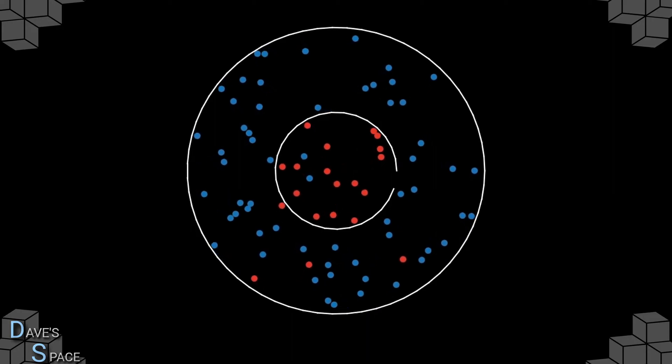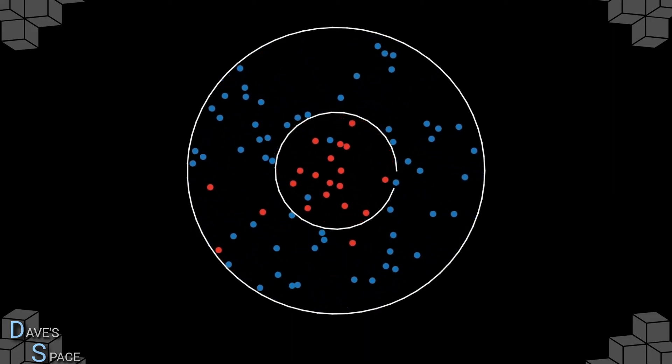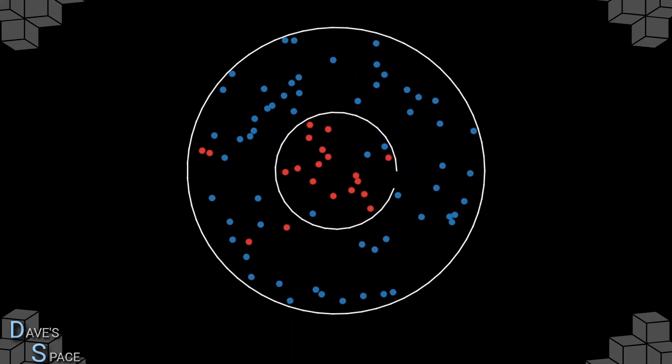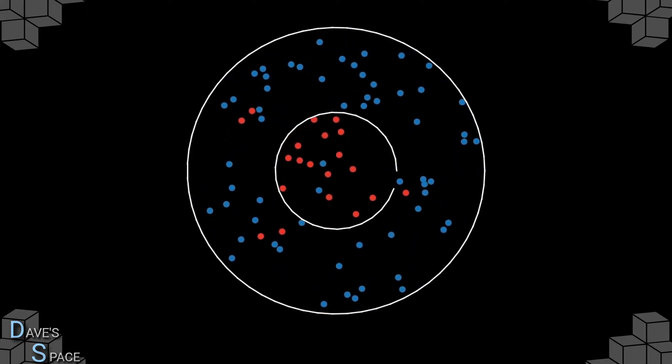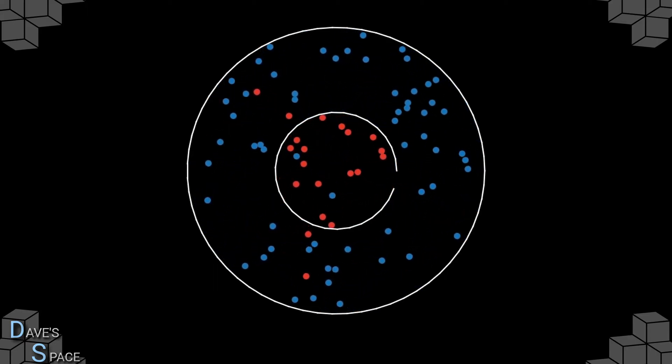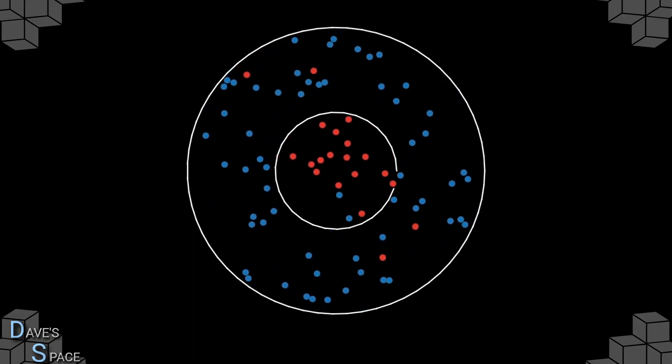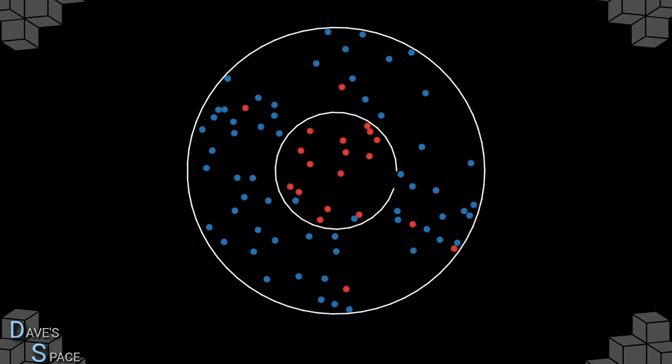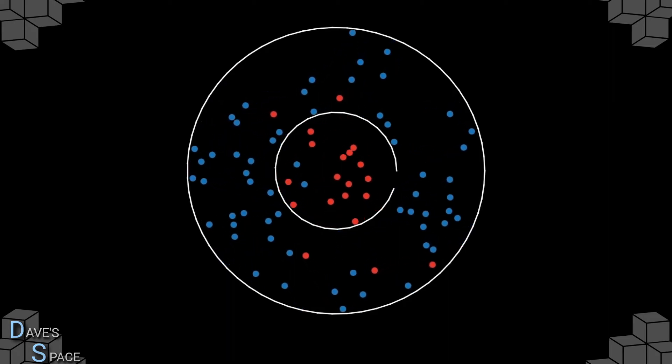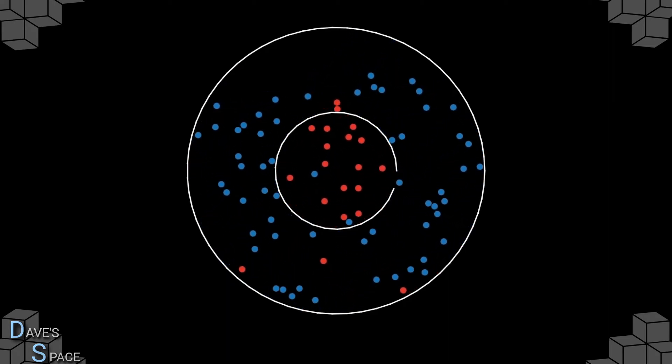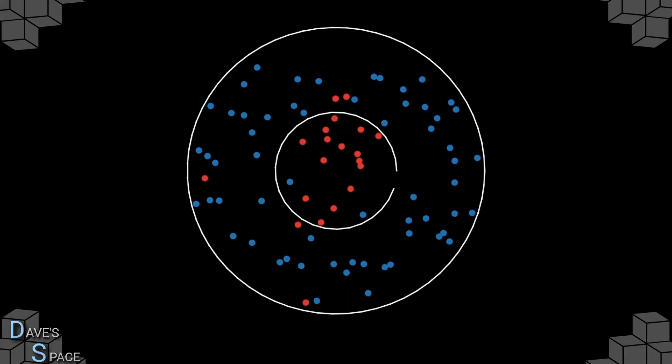The keyword here is more likely. Just because there are more red particles in the middle, does not mean no red particles can re-enter. Likewise, just because there are more blue particles in the outer container, does not mean blue particles won't re-enter from the middle. If you re-watch this video over and over, you will see several instances where this occurs.